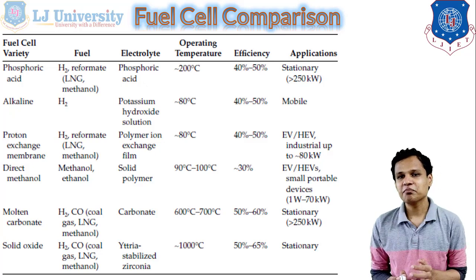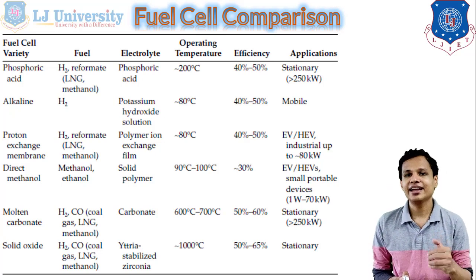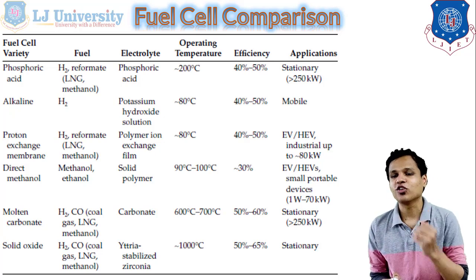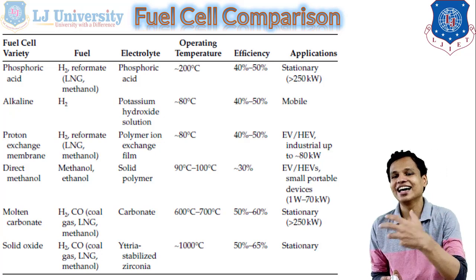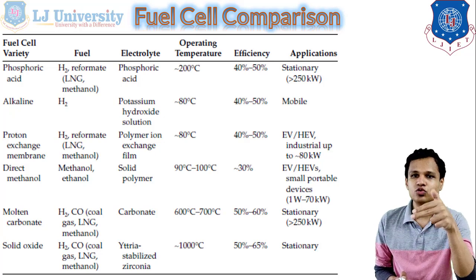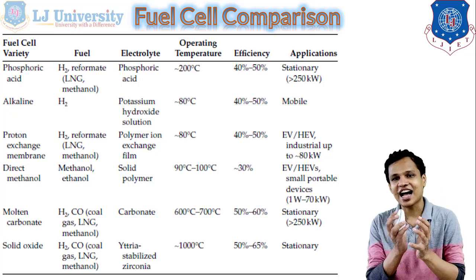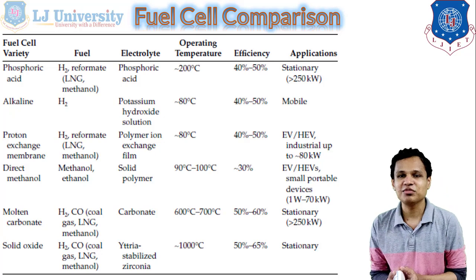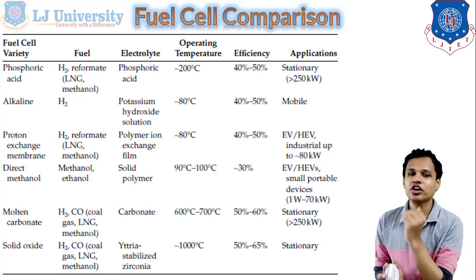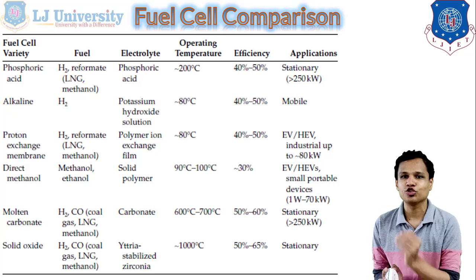The molten carbonate fuel cell operates at around 600 to 700 degrees, so it can only be used in stationary applications. The solid oxide fuel cell also can only be used for stationary applications because of its high working temperature. Both of these last two fuel cells give the highest efficiency compared to the others because they operate at higher temperatures and that heat can be utilized. However, because of feasibility issues, we cannot use these fuel cells in electric or hybrid vehicles.